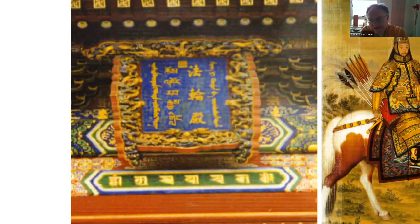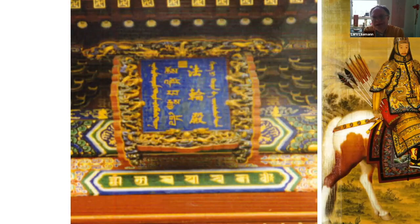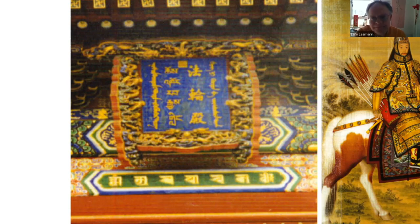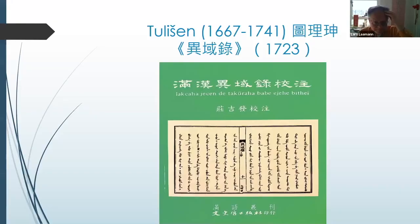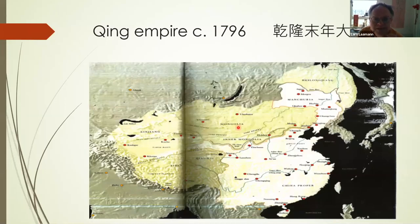Why does Tibetan Buddhism play such an important role? Tibetan Buddhism is the glue that keeps the non-Chinese parts of the Qing Empire together. You have a northern belt from Korea, all the way through Manchuria, Mongolia, and then historically through Xinjiang and Tibet. By the 15th century — the mid-to-late Ming era — Xinjiang had predominantly converted to Islam.